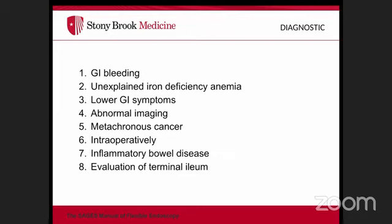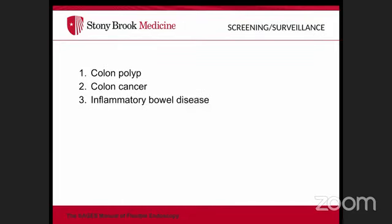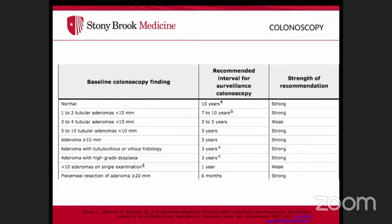Screening for colon polyps and cancer is the most common indication. Screening starts at age 50 — now changing to 45, especially for high-risk patients — and typically continues until age 75. A normal colonoscopy is repeated every ten years. If polyps are found, follow-up intervals of six months, one year, three years, or seven to ten years are recommended depending on polyp type and size.